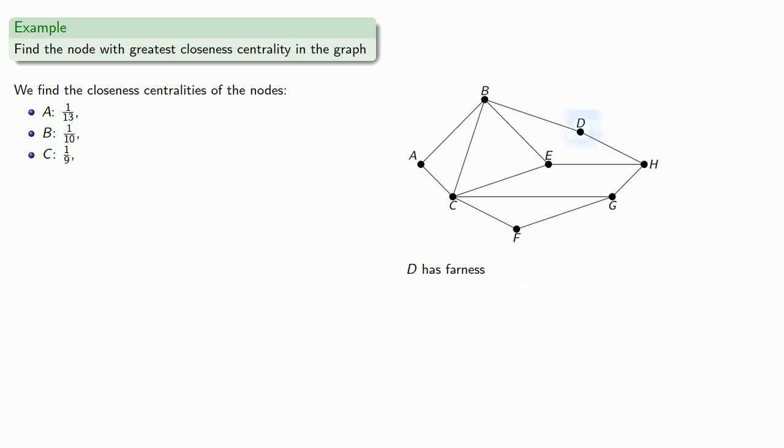If we go to node D, we see there are 2 nodes, B and H, at distance 1. We have 4 nodes at distance 2. And 1 node at distance 3. So our total farness will be 2 ones, 4 twos, and 1 three, which add to 13 and a closeness of 1/13.